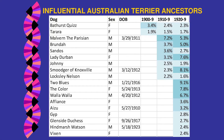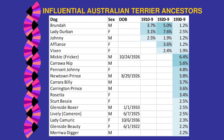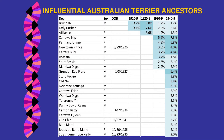New dogs from the teens enter: Two Blues, The Color, Walla Walla, Affiance, Jip. In the 1930s: Carawa Nip, Pennant Johnny, Newtown Prince — dogs you might have heard of. Also Carawa Billy and Marawa Digger. In the 1940s: Grendon Red Flair, Old Nell, Sturt dogs starting to come up, Warawa Digger, Blue Metal, Brayside, Bella Marie, Strathdeen, Hope Kelly. In the 1950s, Carawa Nip solidifies along with Pennant Johnny, Newtown Prince, and Strathdeen Terry starts jumping in.